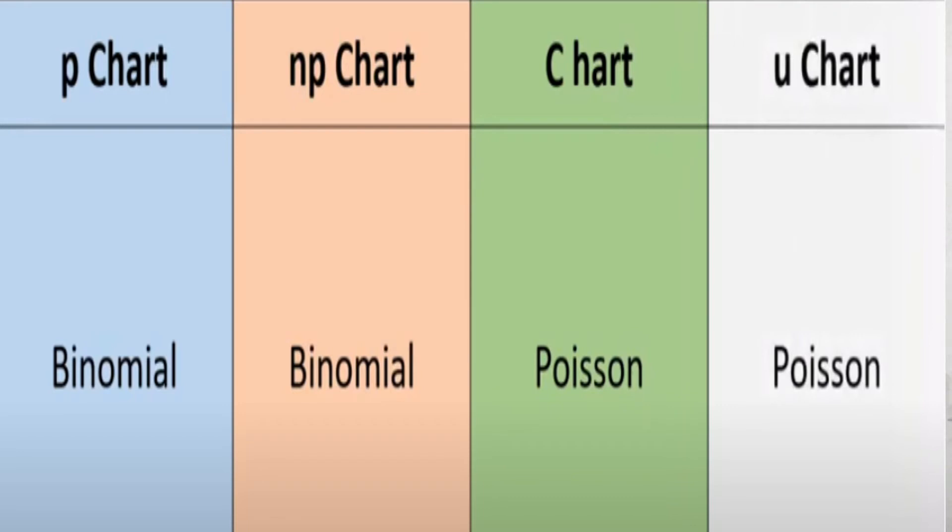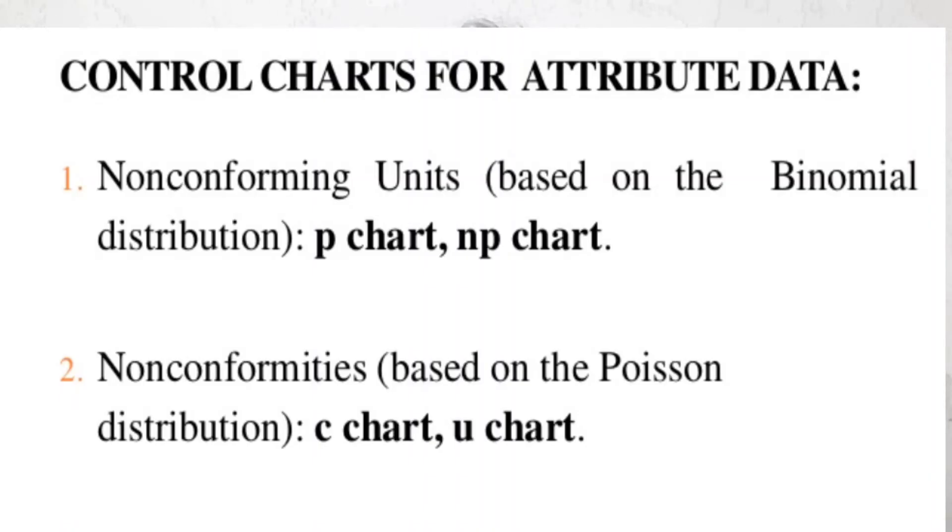In P and NP chart, we are talking about number of defectives, that is number of non-conforming products. When we are talking about C and U chart, specifically, we are talking about number of defects.